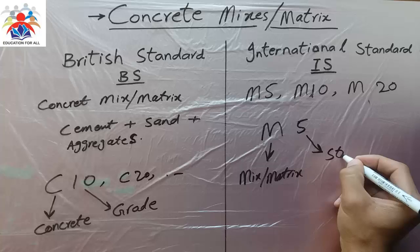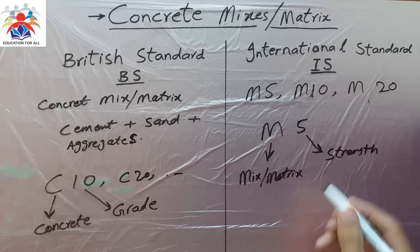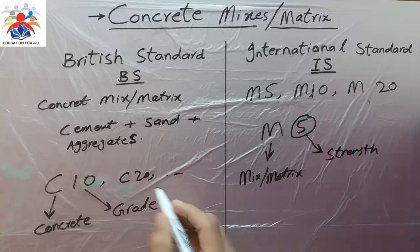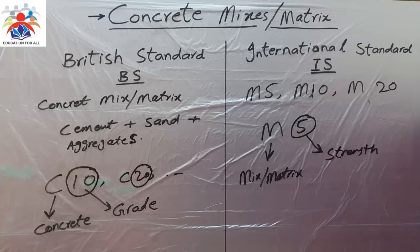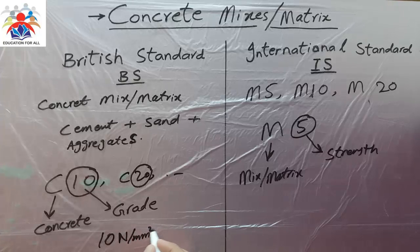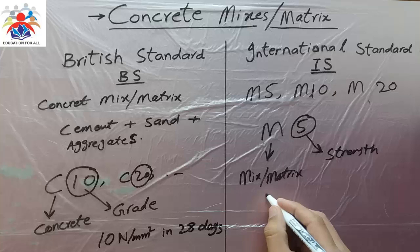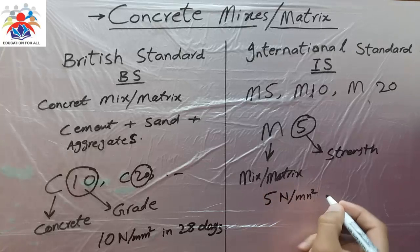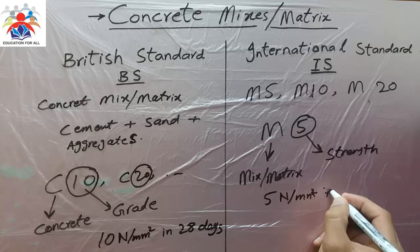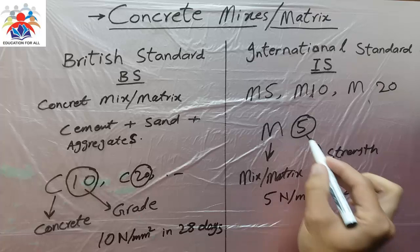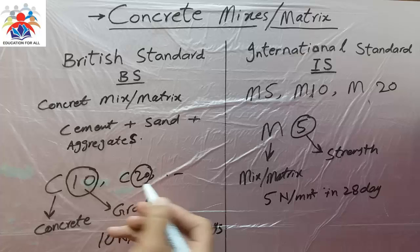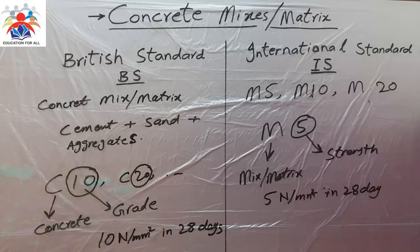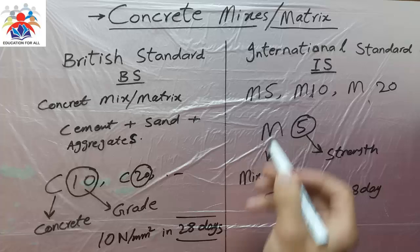The number — 5, 10, or 20 — represents strength. It means our concrete is going to have a compressive strength of that number in N per mm² at 28 days. So M5 means 5 N/mm² at 28 days, M10 means 10 N/mm² at 28 days, and so on. The same concept applies to British Standard grades — the number shows the strength of the concrete in 28 days. That is the basic concept behind these codes.